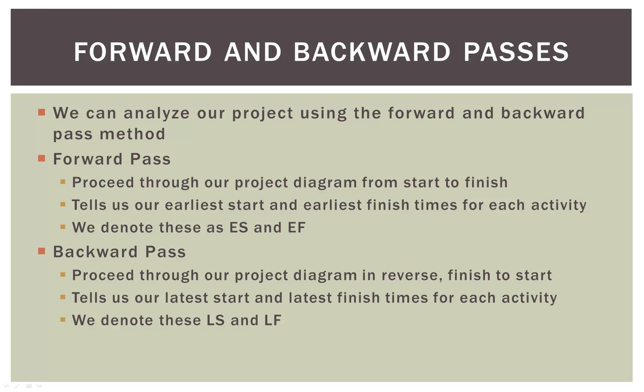So what exactly is a forward and backward pass? The forward pass means we proceed through our project diagram from start to finish — it tells us our earliest start and earliest finish times for each activity, denoted ES and EF. The backward pass is the exact opposite: we start at the end of our project and go backward to the beginning, which allows us to find the latest start and latest finish times for each activity, denoted LS and LF. Those tell us the threshold of when an activity can end without delaying our entire project.